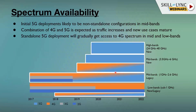Rather than doing spectrum refarming, let's see what we can do by using the LTE FDD carrier and sharing that band. Initial 5G deployments are likely to be non-standalone — the normal evolutionary path from 4G to 5G — and we start by deploying non-standalone configurations before moving to standalone. A combination of 4G and 5G is expected as traffic increases and new use cases mature, meaning we'll have a quasi-mix of 4G and 5G sites for the foreseeable future.